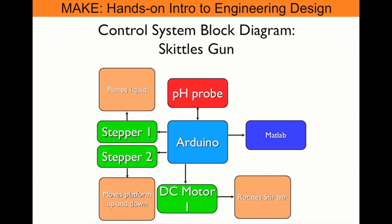Those steps will correspond to 0.2 milliliters of base dispensed into the solution. At the same time, it will also send the signal to a DC motor with a stirring mechanism that will cause turbulence in the solution so we get a faster pH reaction.